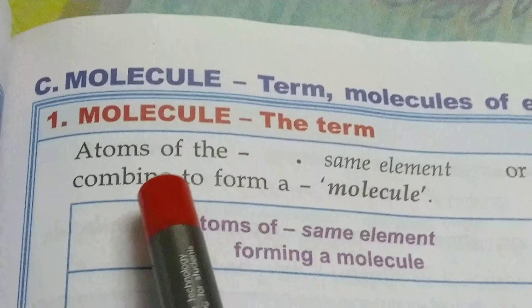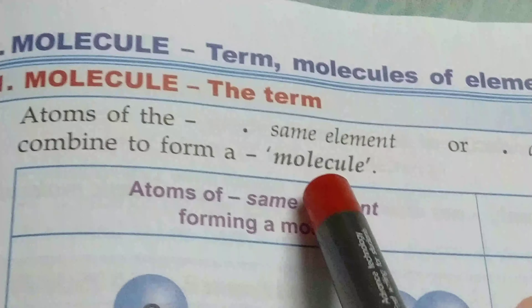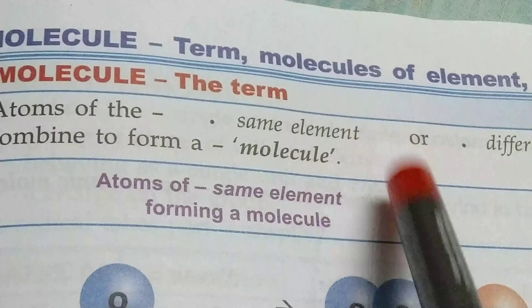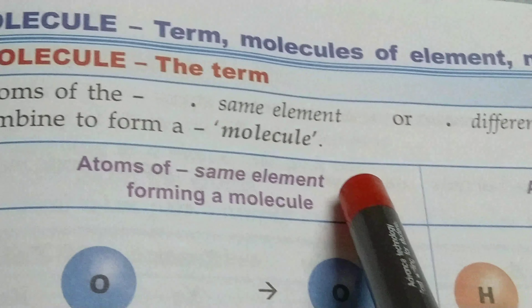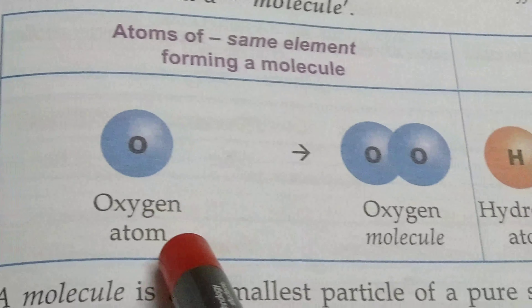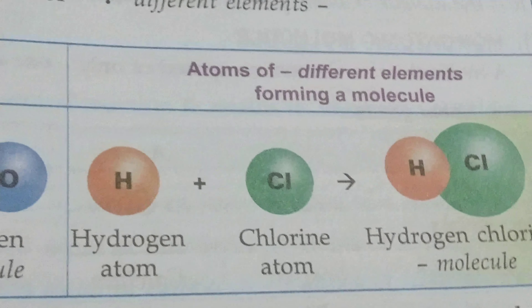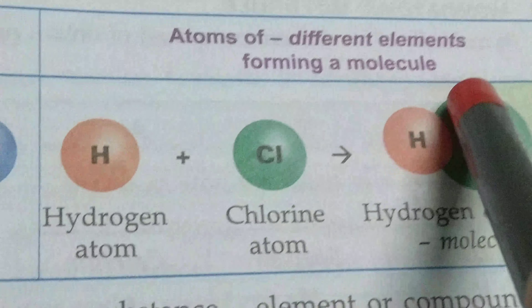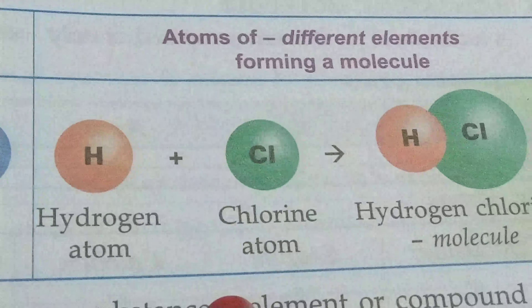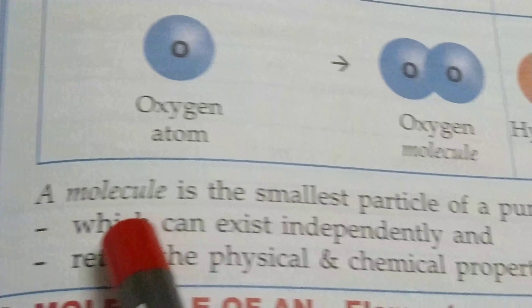Atoms of the same element or different elements combine to form a molecule. Same kind of atoms or different kinds of atoms combine with each other to form a molecule. Atoms of the same element forming a molecule: oxygen atom combined with oxygen atom to form an oxygen molecule. Whereas atoms of different elements forming a molecule: hydrogen atom combined with chlorine atom to form a hydrogen chloride molecule.